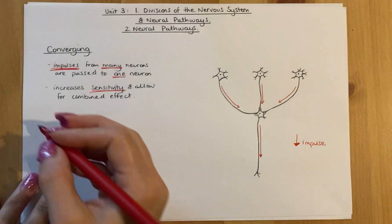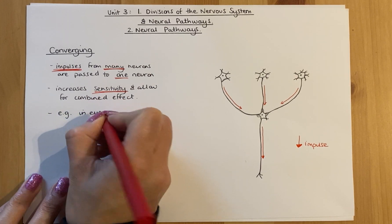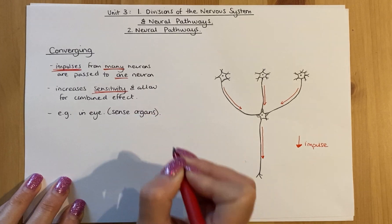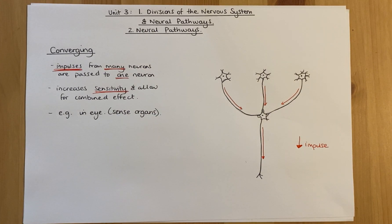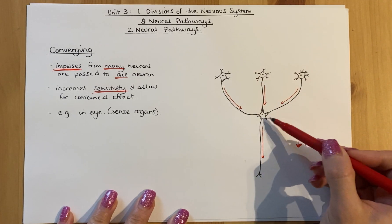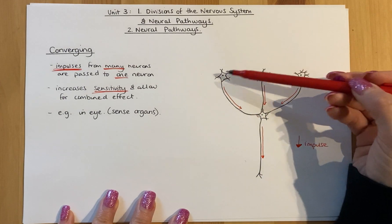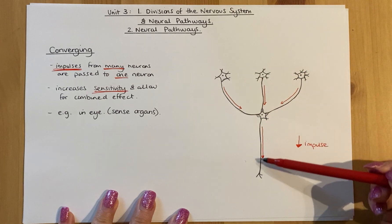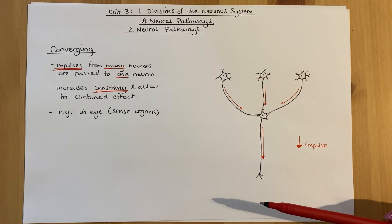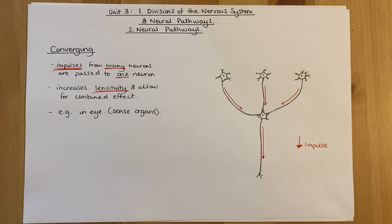Another example, which we often talk about, is ones in the eye — mainly in sense organs. If you think about the eye, the retina at the back has multiple different rods and cones, thousands and thousands of them. They pick up lots of information, and each rod and cone passes its impulse to one neuron which passes along the optic nerve, so you get a gathered effect. In low light, you pick up small amounts of light in each of these, but when you combine that together you get a combined effect — impulses from many neurons pass to one neuron. These are often related to sense organs.